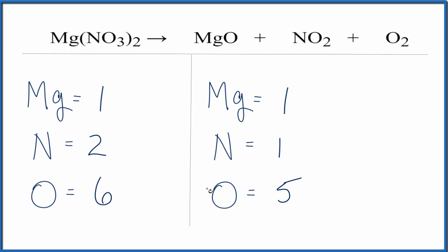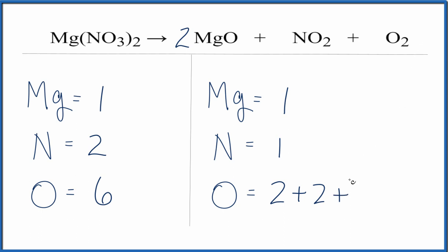So let's see if we can get this to an even number. I'll put a two in front of the MgO. That means I now have two times one — two oxygens here, plus the two here, plus these two — that gives me six oxygens. So I've balanced the oxygens. That's not too bad.